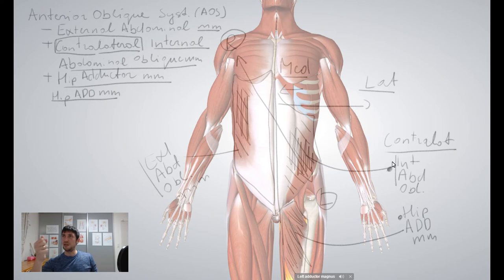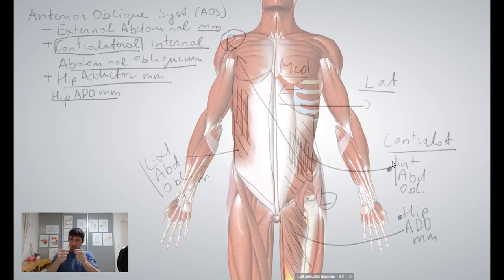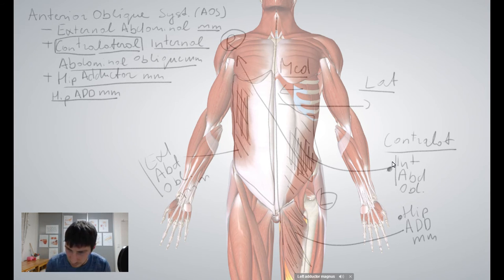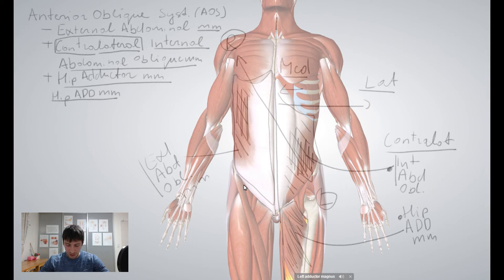We shouldn't strengthen only one system — all of them have to be equally strong and equally stretched. All these systems should fire only after the inner unit fires first: core is strong, core is tight. Only then do we engage these additional outer structures. Even brushing your teeth or gardening requires proper posture — back injuries are possible, and I see that in my practice again and again, especially springtime and autumn.